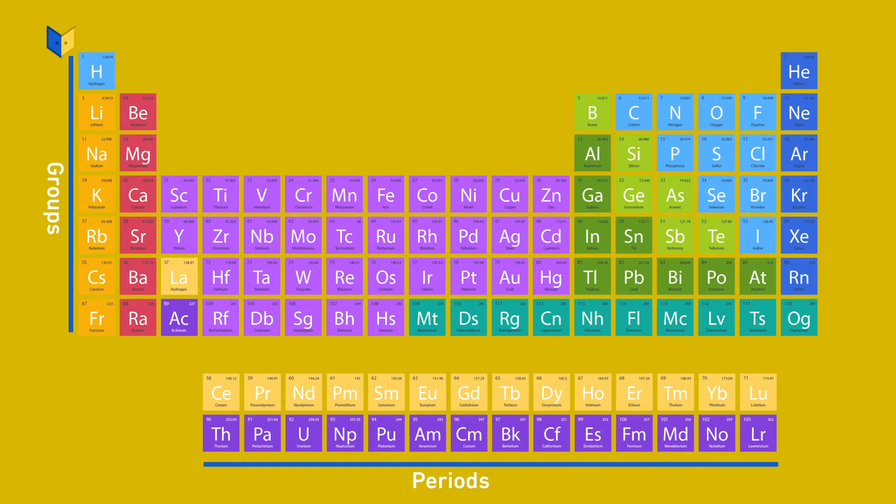Now, you must be wondering what are groups? So, the columns that we have represent the groups. There are eight groups in the periodic table and the horizontal lines are known as periods.